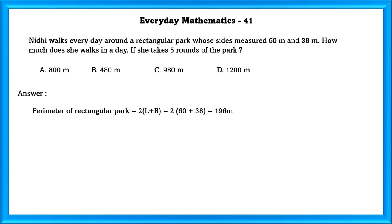Perimeter of the park is equal to 196 meters. Given she takes 5 rounds every day. So, distance everyday she walks is equal to 5 into 196 which is equal to 980 meters.